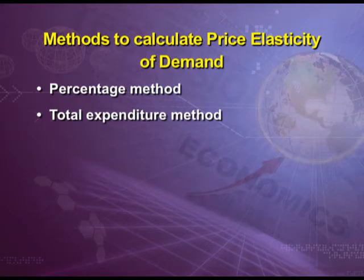The third method to calculate price elasticity is the geometric method. This method is used when the demand curve is a straight-line downward-sloping curve. Elasticity of demand is 1 at the midpoint of the demand curve, 0 at the point where the demand curve touches the x-axis, and infinite where the curve touches the y-axis.